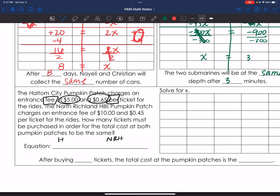Pumpkin Patch charges an entrance fee of $10.45 per ticket for the rides. How many tickets will we purchase in order for the total cost at both pumpkin patches to be the same? So I should have an equal sign in between here. All right, I have a constant of 5 plus the .65 per ticket. And then here I have a $10 constant plus the .45 coefficient per ticket.